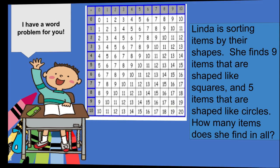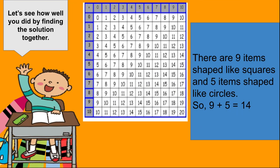Let's see how well you did. So, let's work out this answer together. If there are 9 items shaped like squares and 5 items shaped like circles, then 9 plus 5 is 10, 11, 12, 13, 14. 9 plus 5 is 14. Yes! So, there are 14 items in all.